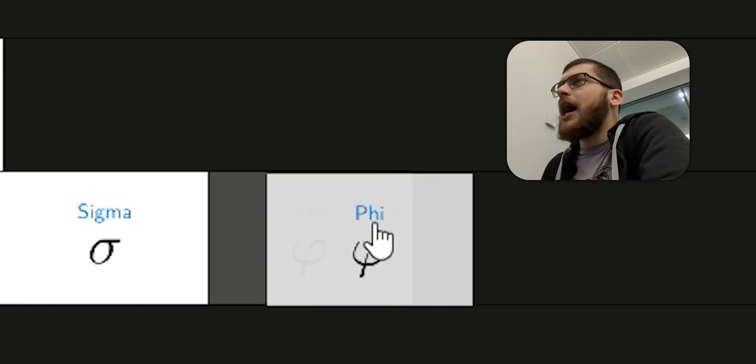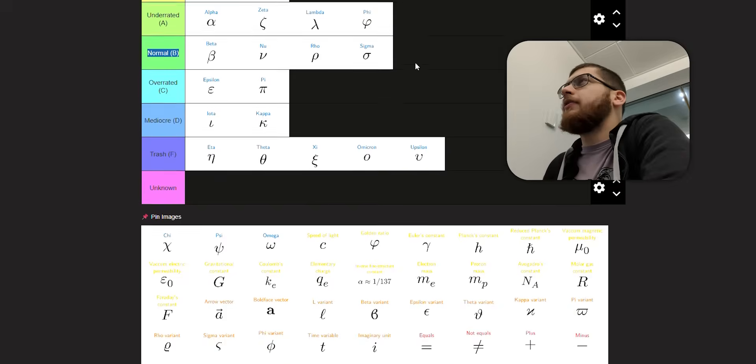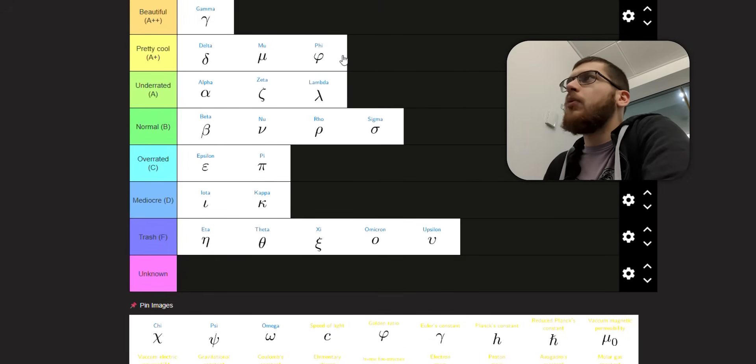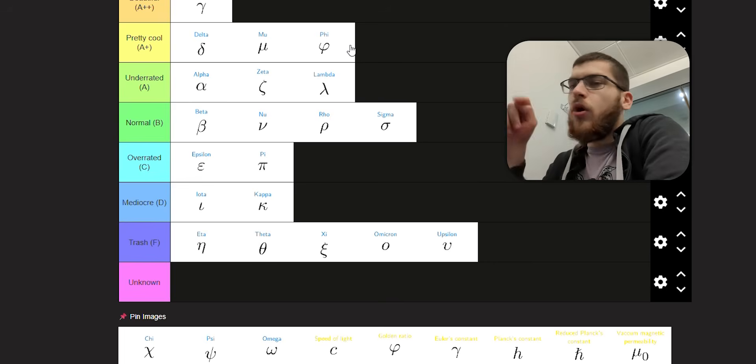Upsilon. Terrible. It looks like a V. It just looks like a V. You've got phi, which I think is a very nice symbol. I'm going to put it up with mu because phi, one stroke. It's unique. It's identifiable. It's beautiful.